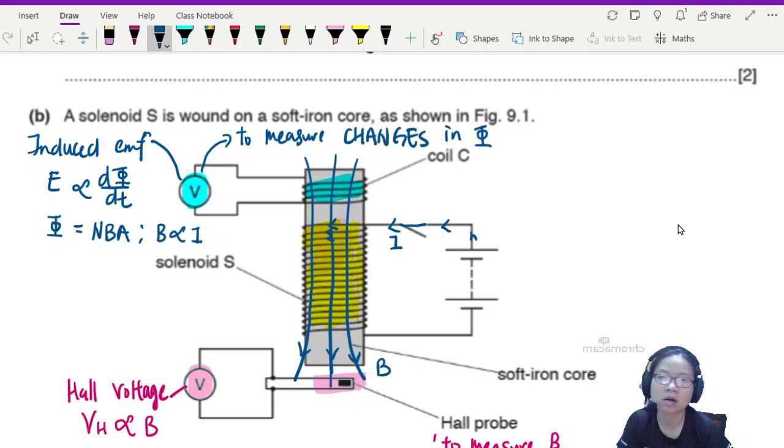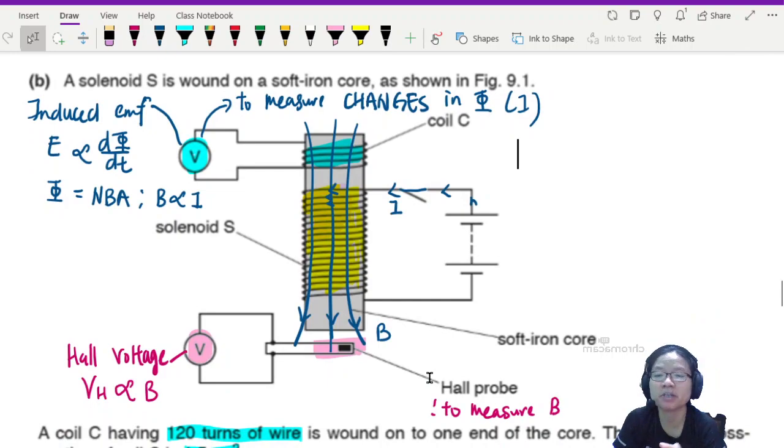And this induced EMF, let's say I call this E, is proportional or equal to the rate of change in magnetic flux. However, flux is equal to NBA. And your B is proportional to your current flow. So basically, if I change the current inside the solenoid, I will change the flux and I will induce EMF. So what this measures, this is to measure changes in flux. In this case, the very obvious change here is current because you turn on and turn off the switch.